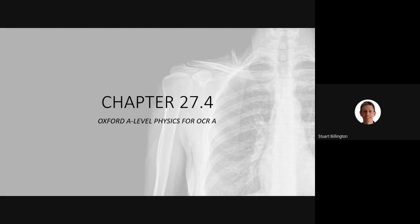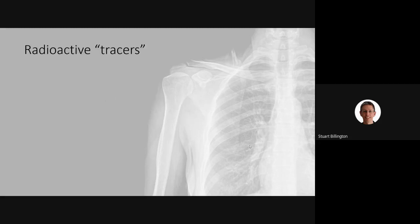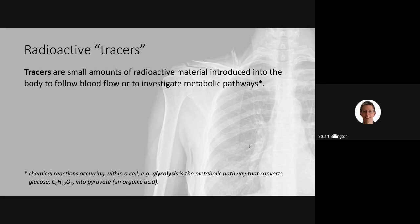Today's lesson is covered by two parts of the textbook: 27.4 and then 27.5 later on. This should be familiar from GCSE where we mentioned radioactive tracers in the radioactivity topic. At A-level we just need to add a little bit more detail on to what you already know. A tracer is what we refer to as any material that we place inside the human body.